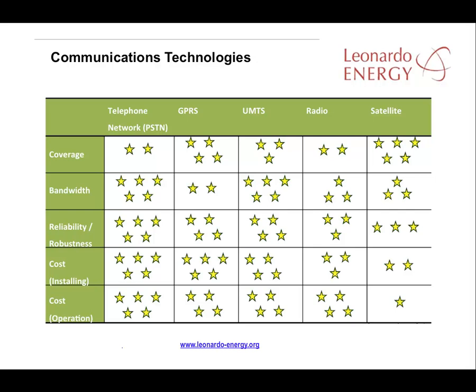Here we have a comparison table of technologies that could be used for remote communications. The more stars in a cell, the better the technology. While satellite offers the best coverage, it also comes with the highest installation and operation cost. UMTS cell phone technology is probably most recommended as the networks continue to spread and develop at a rapid pace worldwide. If there is telephone network coverage in the area of the PV facility, that might be the cheapest and most reliable way to communicate with the solar plant.